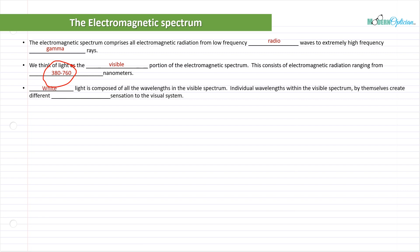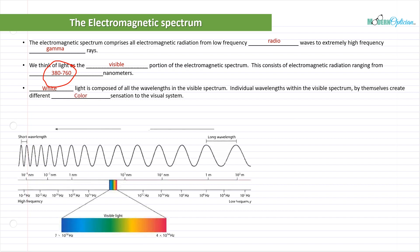So white light is comprised of all the wavelengths in that spectrum. And individual wavelengths within the visible spectrum by themselves create different color sensations to the visual system. So maybe we should take a look at the electromagnetic spectrum.